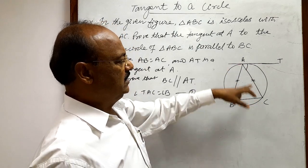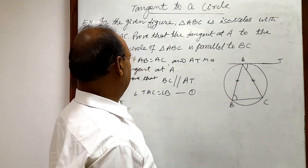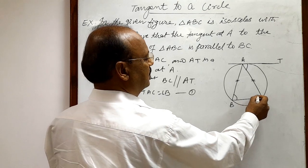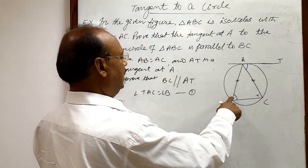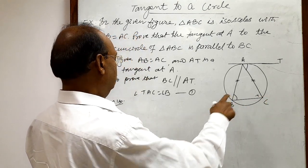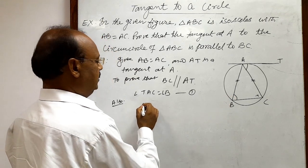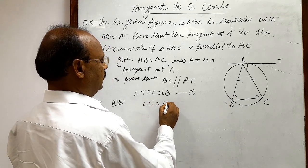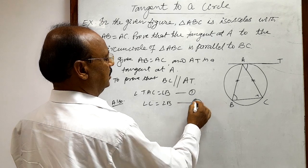triangle ABC is an isosceles triangle, so we can write this angle C is equal to angle B. Okay. Also, we can write angle C is equal to angle B.